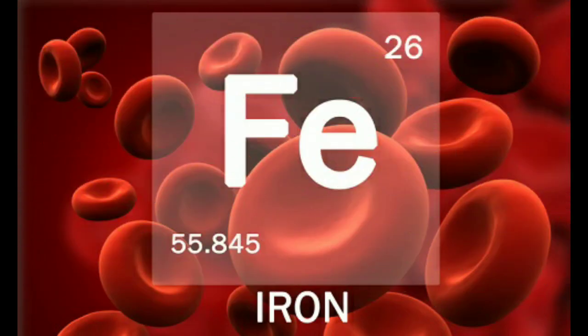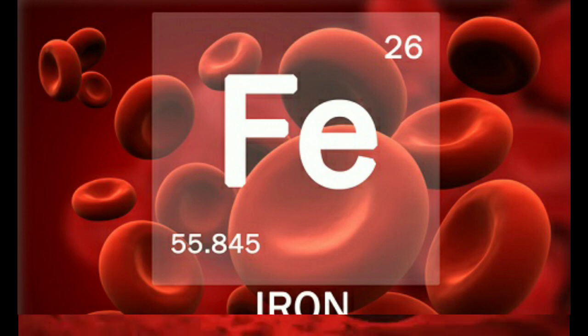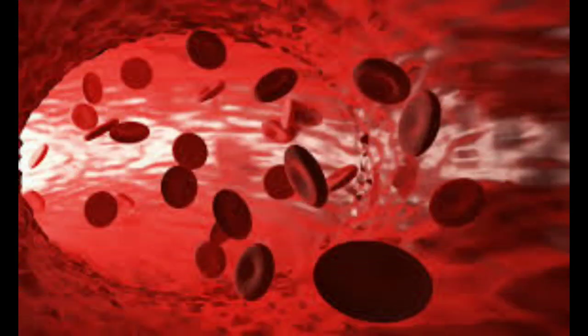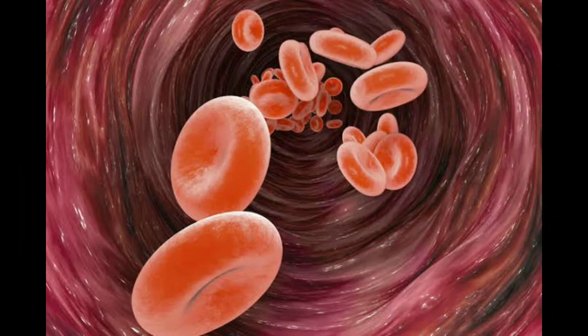Iron is very important for the formation of not only hemoglobin but also other essential elements of the body like myoglobin, cytochromes, and others. The average total iron in our body is 4 to 5 grams. Of this, 65% is in the form of hemoglobin, about 4% in the form of myoglobin, about 1% in various heme compounds, 1% combined with transferrin, and about 15 to 30% stored for later use.